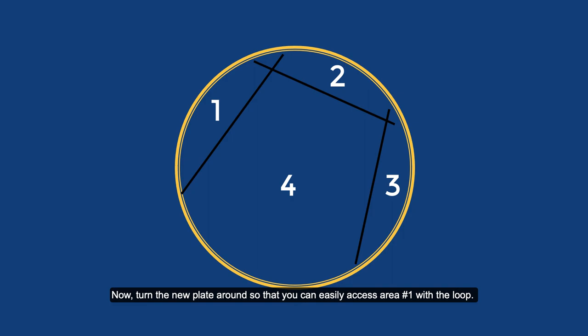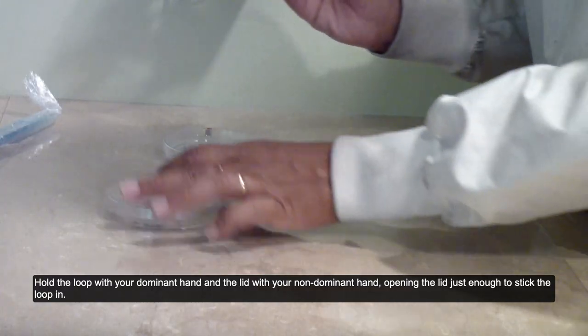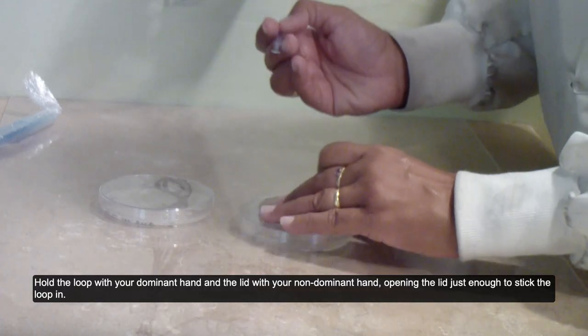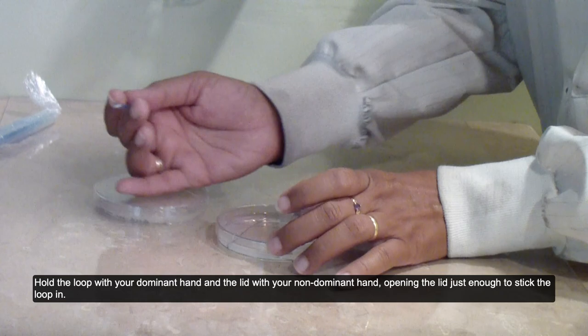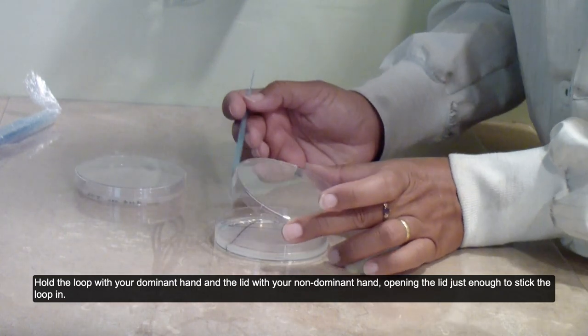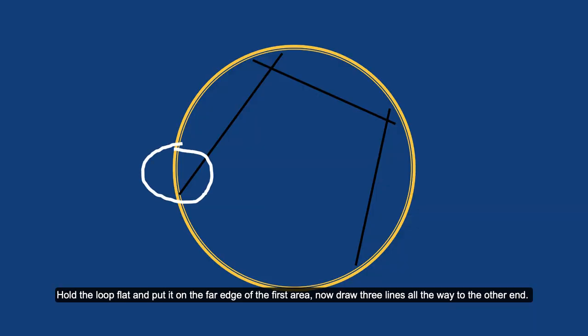Now, turn the new plate around so that you can easily access area number one with the loop. Hold the loop with your dominant hand and the lid with your non-dominant hand, opening the lid just enough to stick the loop in. Hold the loop flat and put it on the far edge of the first area. Now draw three lines all the way to the other end.